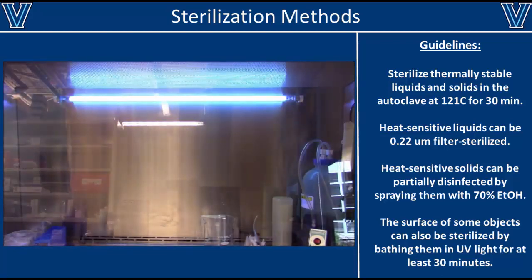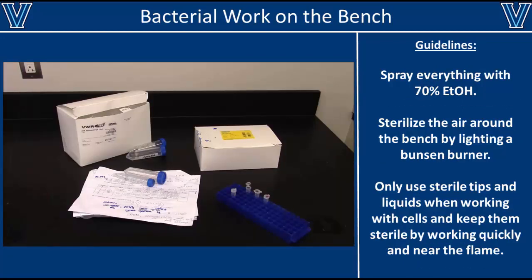An alternative way to sterilize surfaces is to bathe them in ultraviolet light, such as found in the biological safety cabinet. UV light decontaminates surfaces by damaging any DNA it comes into contact with. However, this process is only partially effective and only works when the surface has a direct line of sight to the UV source. If you must sterilize something with UV light, it is recommended to do so for at least 30 minutes, but you'll never be absolutely sure the surface is sterile.